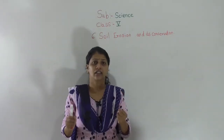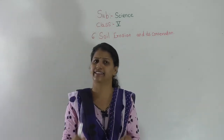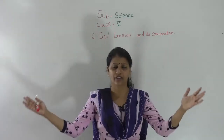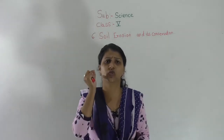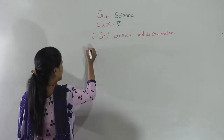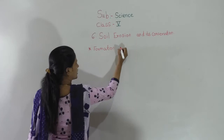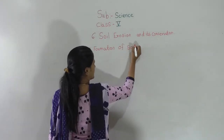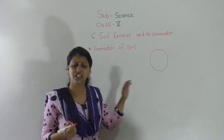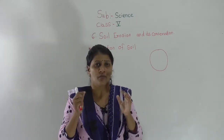If the rocks break into small pieces, they are converted into soil. But how is the big rock converted or divided into small, tiny pieces? Today, first we will learn the formation of soil — how the soil is formed. See, this is a rock — a big rock. If this rock breaks into tiny particles, how does it happen?